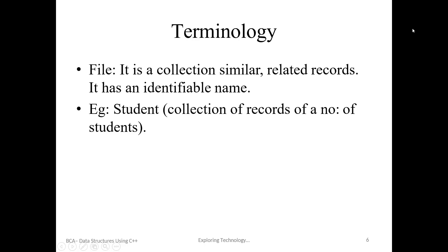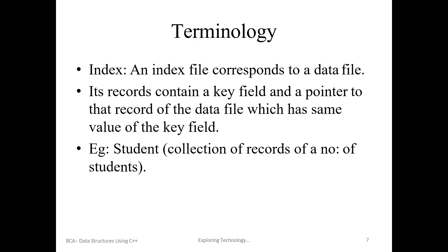A file is a collection of similar related records, and it has an identifiable name. We are going to use student information — we are going to use one student record as a data file. The key value is the record and address.